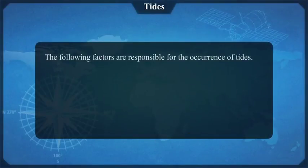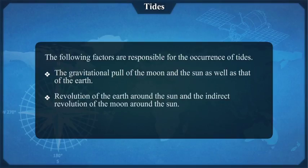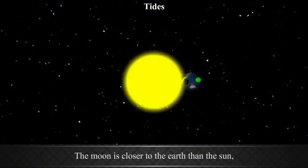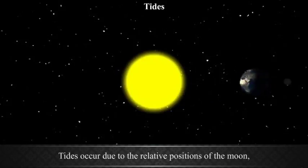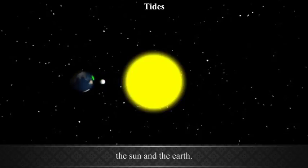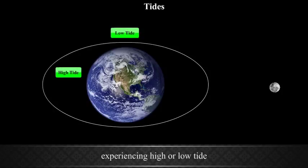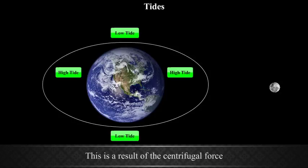Tides are caused by the gravitational pull of the Moon and the Sun as well as that of the Earth, the revolution of the Earth around the Sun and the indirect revolution of the Moon around the Sun, and the centrifugal force generated due to the rotation of the Earth. The Moon is closer to the Earth than the Sun, so its gravitational force becomes more effective. Tides occur due to the relative positions of the Moon, the Sun, and the Earth. A place on the Earth located at the opposite point of the place experiencing high or low tide also experiences high or low tide respectively at the same time — a result of centrifugal force.